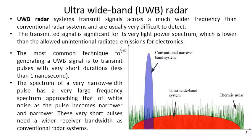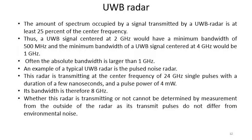The most common technique for generating a UWB signal is to transmit pulses with very short duration, potentially less than one nanosecond. The spectrum of a very narrow pulse approaches that of white noise as the pulse becomes narrower. These very short pulses need a wide receiver bandwidth. The spectrum occupied is at least 20% of the center frequency — so a signal centered at 2 GHz would have a minimum bandwidth of 500 MHz, and one centered at 4 GHz would have a minimum bandwidth of about 1 GHz.